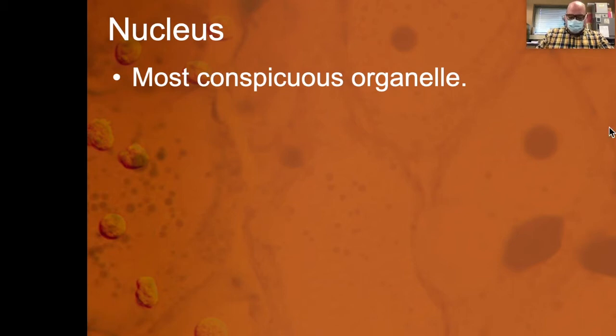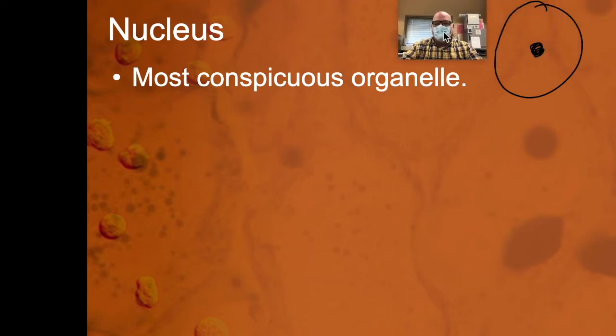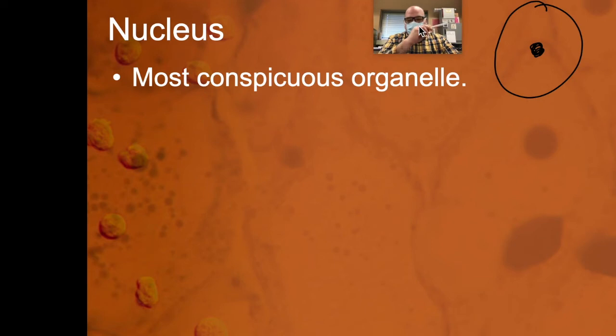If I was going to draw a cell it would pretty much be a circle, a circle with a dot in it. So a nucleus is usually really easy to see in cells. When we look over here we've got the membrane, usually you can see the edge of the cell pretty easily and you've got the nucleus.